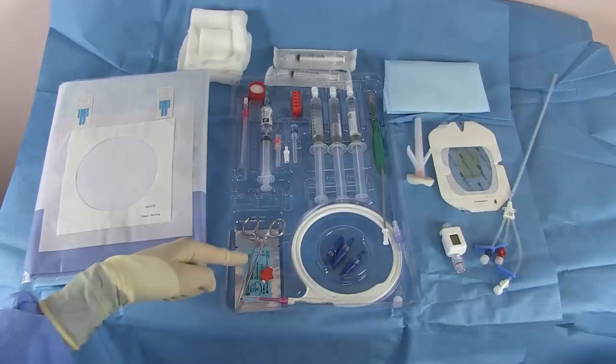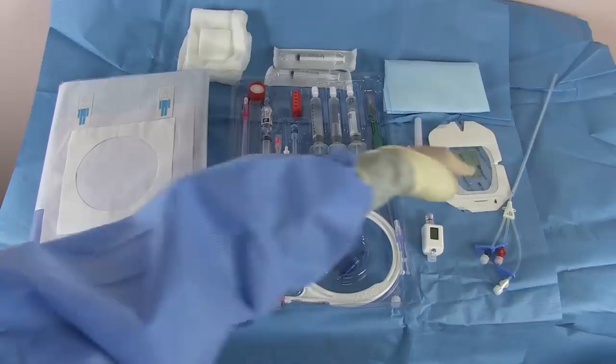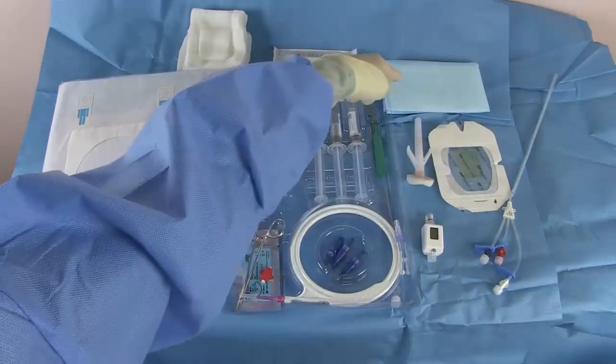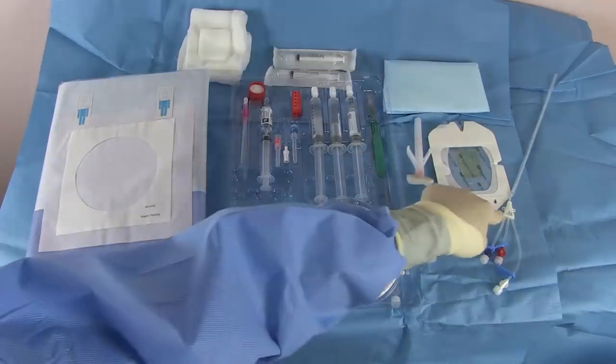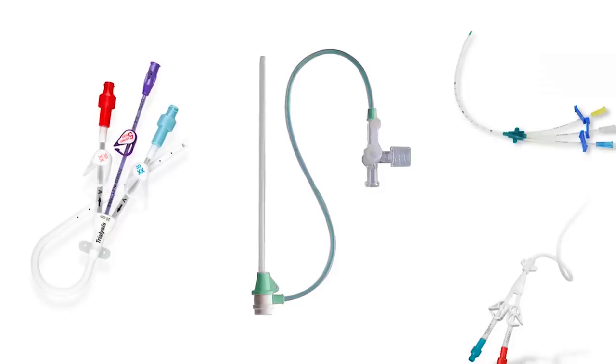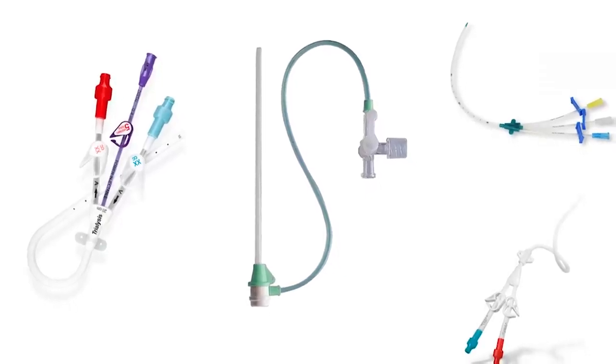Suture, needle driver, and catheter fastener. Some places to hold sharps. Sterile dressing and probe cover that we opened earlier. And the catheter itself. We're using a triple lumen here. If you want a follow up video discussing the different types of catheters, leave a comment below.